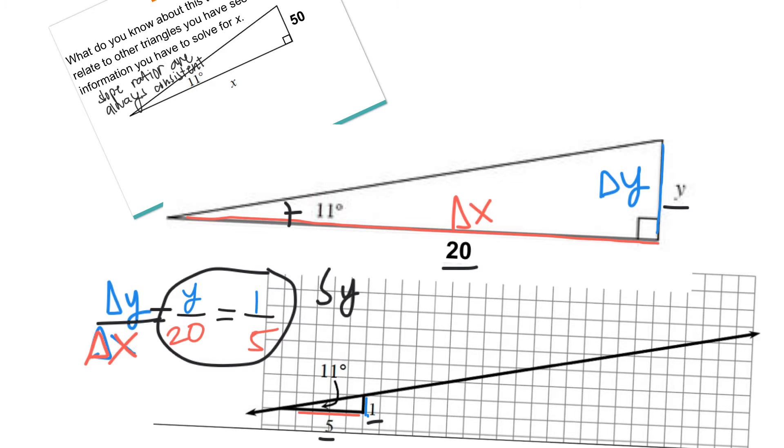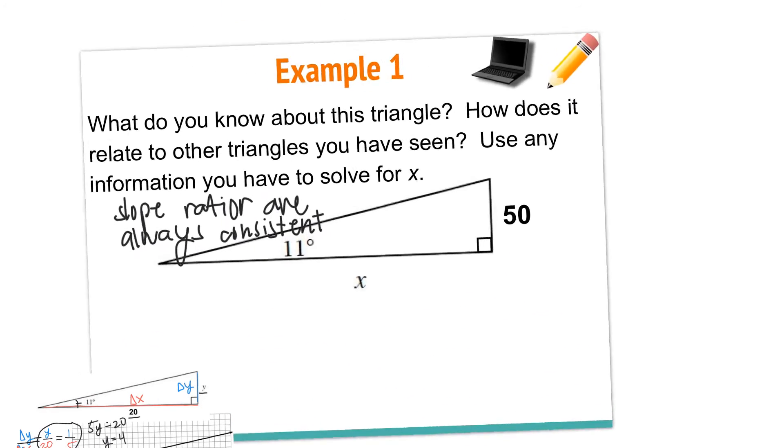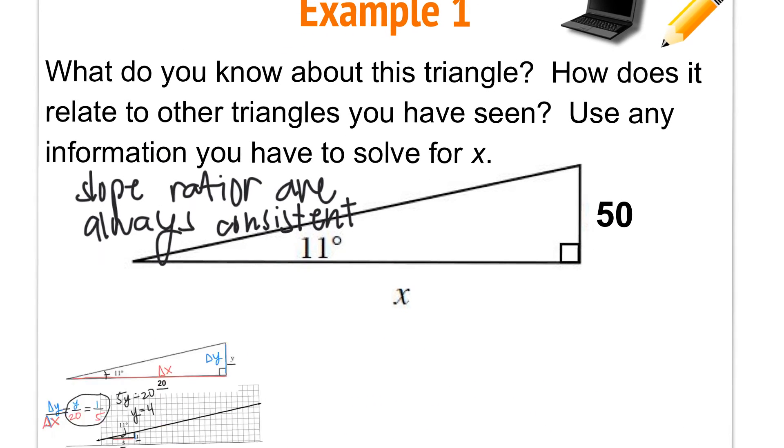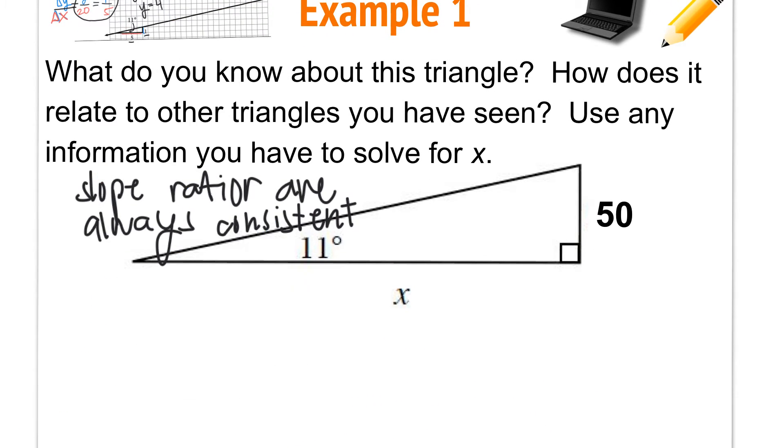Now you probably already know how we're going to do this second problem over here, but it's going to be the exact same thing. I know that because this is 11 degrees and this is a right angle, the slope ratio in this case is also going to be 1 over 5. I know that this is my change in X and this is my change in Y.